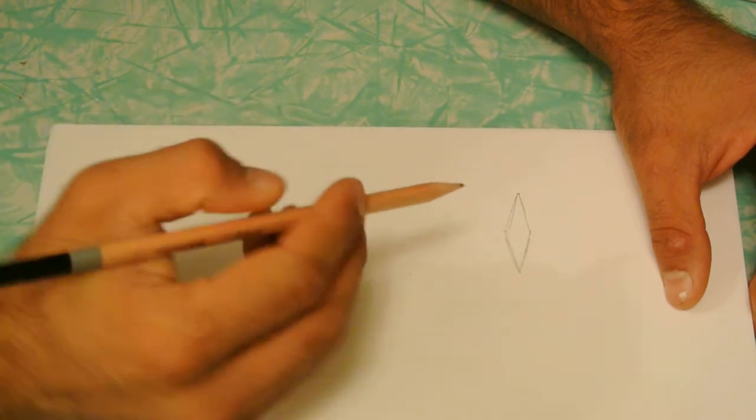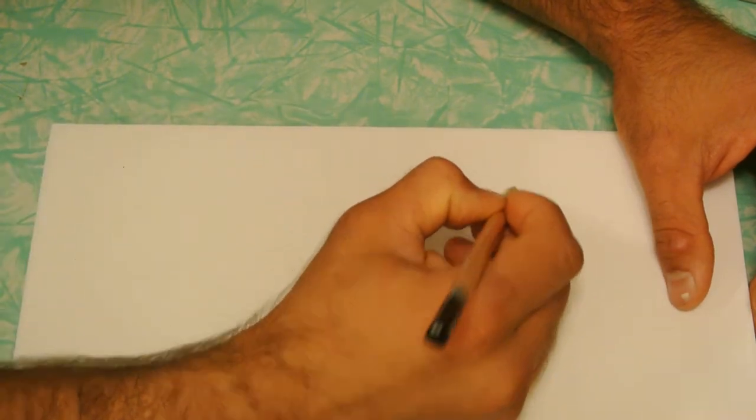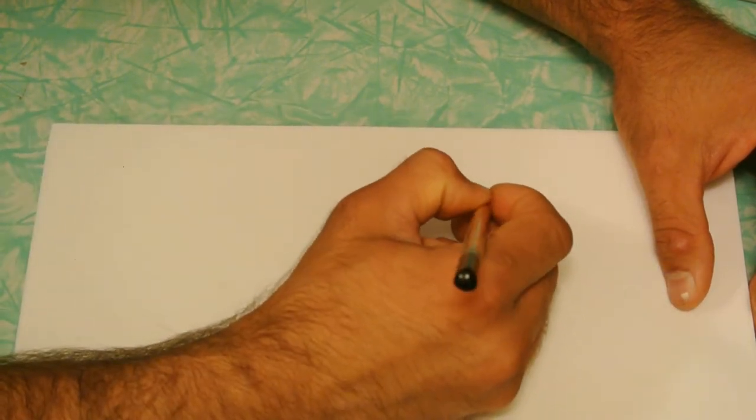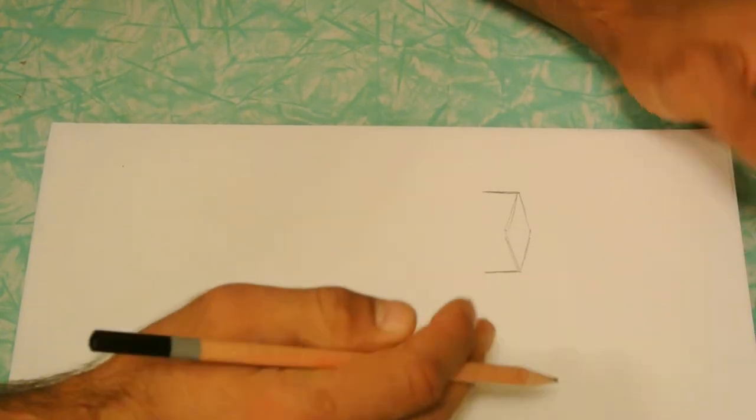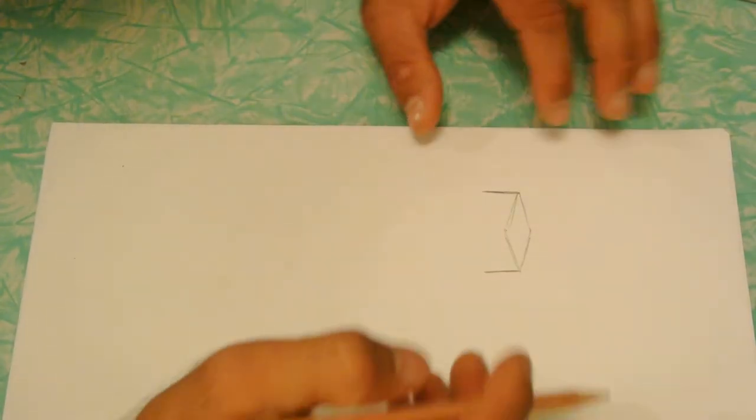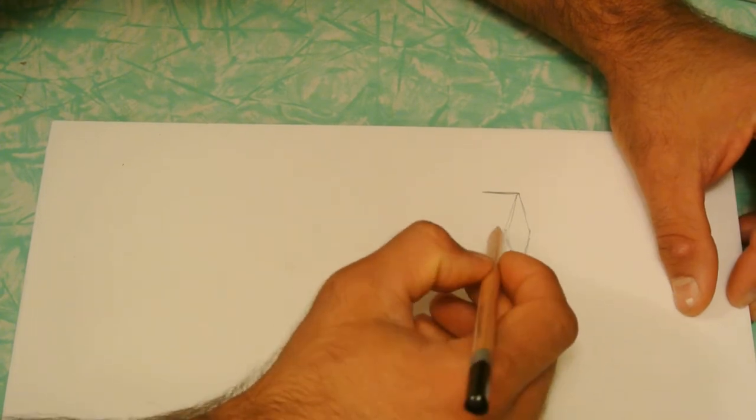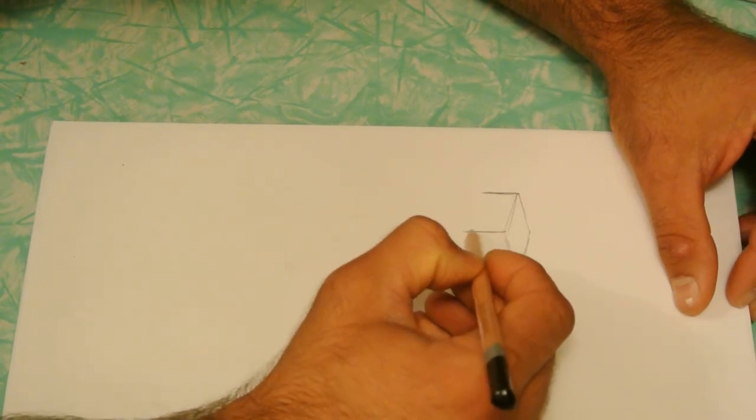The lines don't have to be perfect. Draw your sides coming down to make it a little bit bigger, making sure they're parallel with the sides of the paper so the box doesn't look crooked.